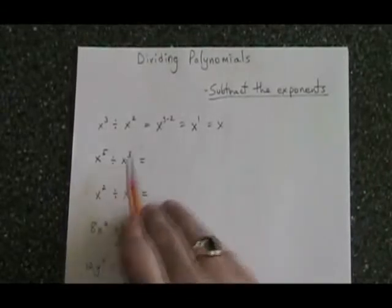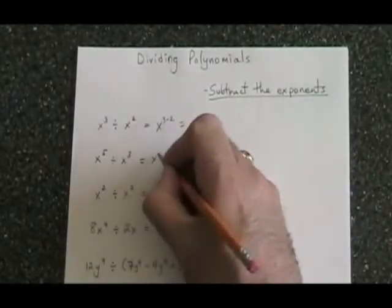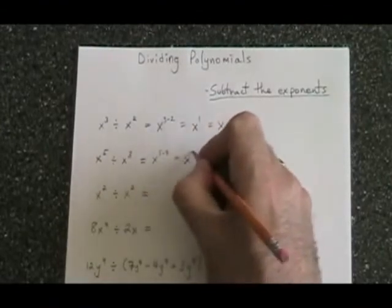Here we have x to the 5 divided by x to the 3. That's equal to x to the 5 minus 3, which is equal to x squared.